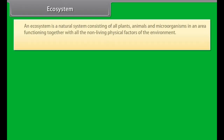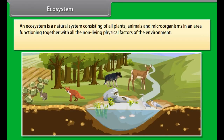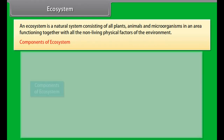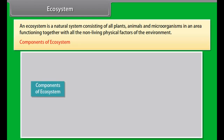Ecosystem. An ecosystem is a natural system consisting of all plants, animals and microorganisms in an area functioning together with all the non-living physical factors of the environment. Components of ecosystem.